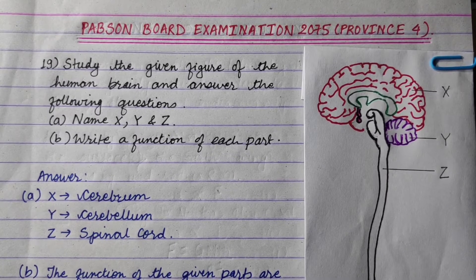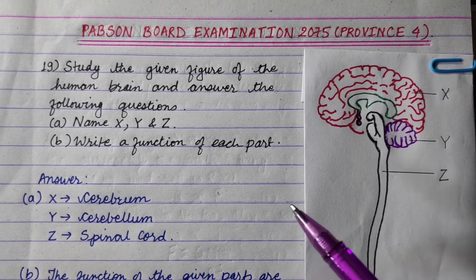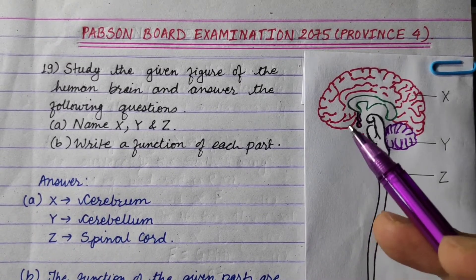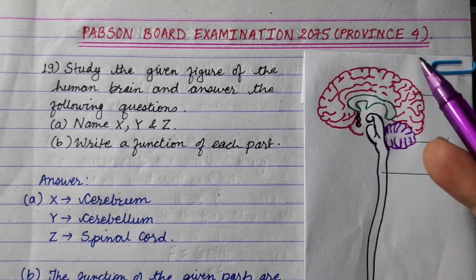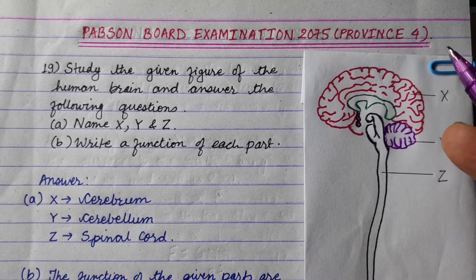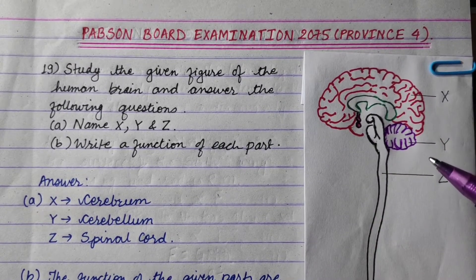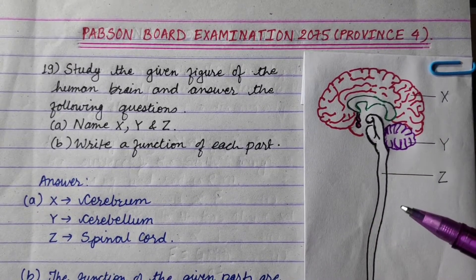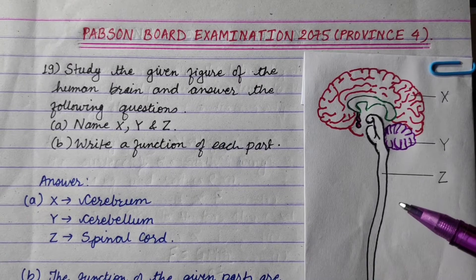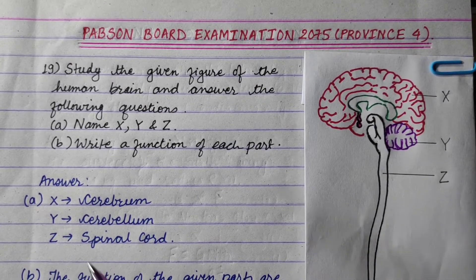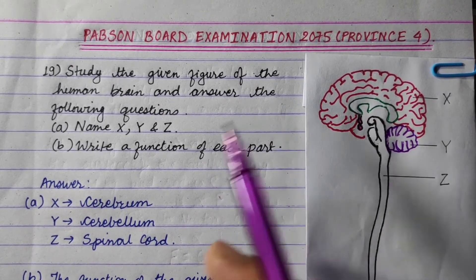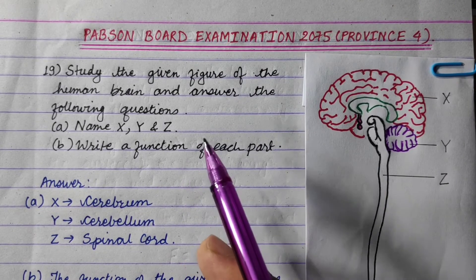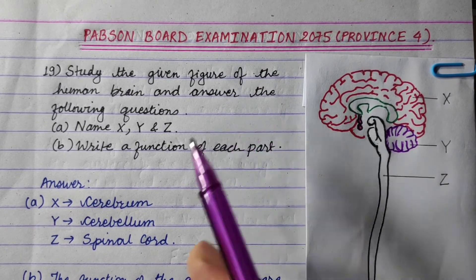Hi everyone. Today we are going to talk about the PAPSOR Board Examination 2075, Province Number 4, Central Nervous System. We have some questions here. Study the given figure of the human brain and answer the following questions.